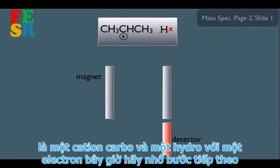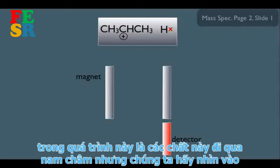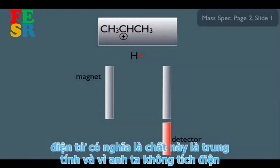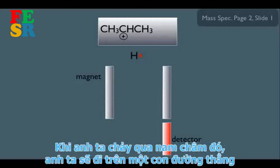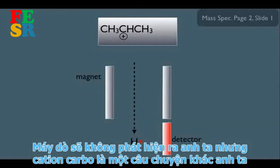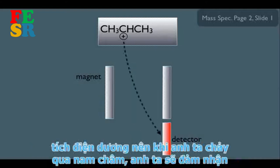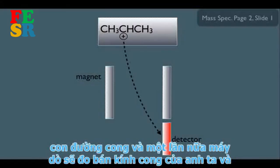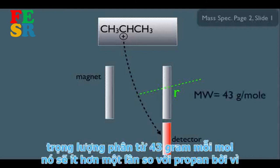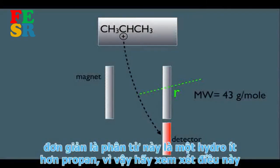When a bonding electron is dislodged, we get a carbocation and a neutral hydrogen atom. The hydrogen, being neutral, travels straight through the magnet and is not detected. Only the charged carbocation takes a curved path through the magnet and is detected. That carbocation is one hydrogen less than propane, so it weighs 43 g/mol and appears as a fragment at m/z = 43.